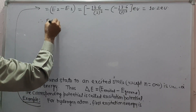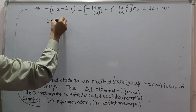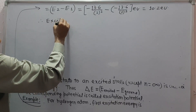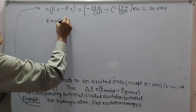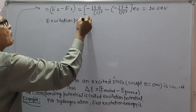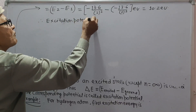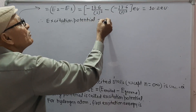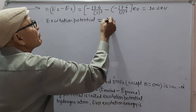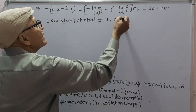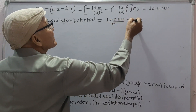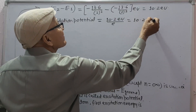The excitation potential will be equal to 10.2 eV divided by e, which gives 10.2 volts.